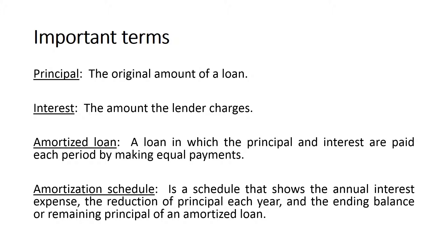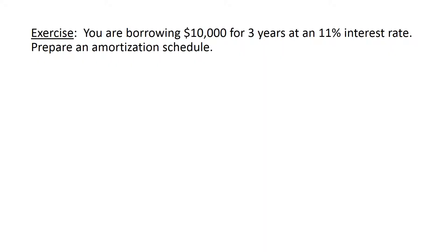Let's get started with an exercise. You are borrowing $10,000 for three years at an 11% interest rate — prepare an amortization schedule. The loan of $10,000 is our principal, 11% is our interest rate, and the number of time periods is three years. But how much is the payment? To prepare an amortization schedule we need to find the payment amount — the same amount paid each period.